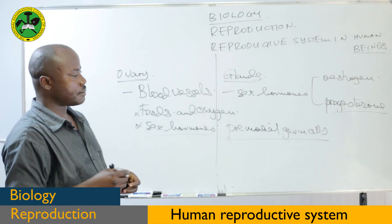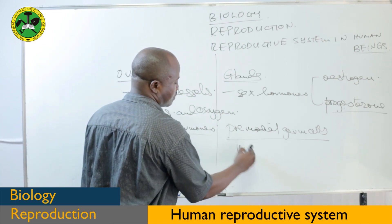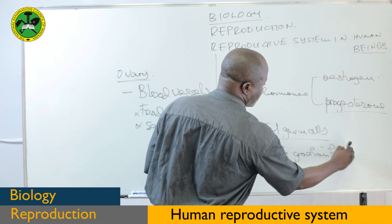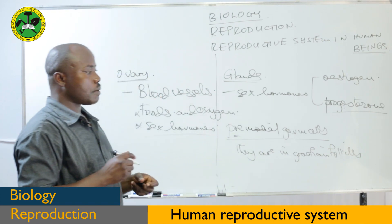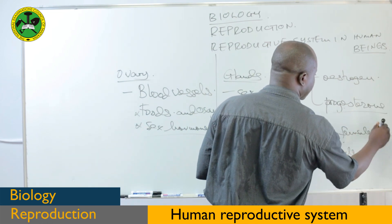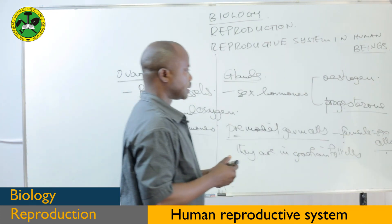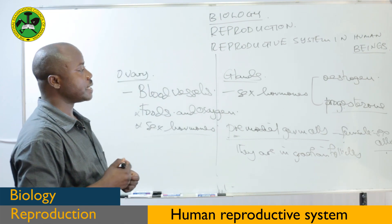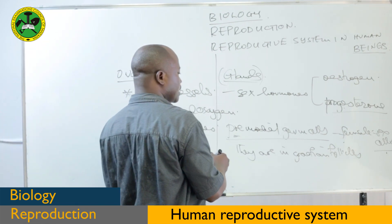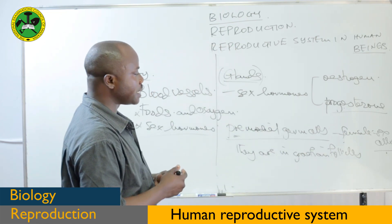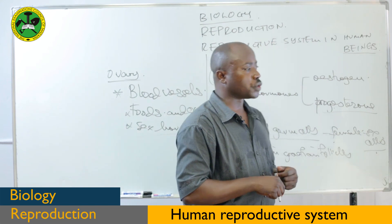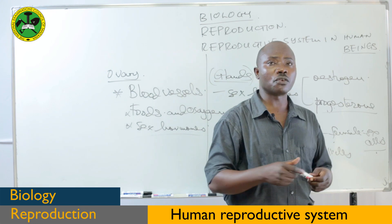The inner part of the ovary also consists of cells that give rise to female reproductive cells — these are primordial germ cells, present in the Graafian follicle. They undergo mitotic and meiotic division to give rise to female sex cells. To answer this question, you have to explain the role of these glands, the role of the blood vessels, and the role of the Graafian follicle containing the primordial germ cells.